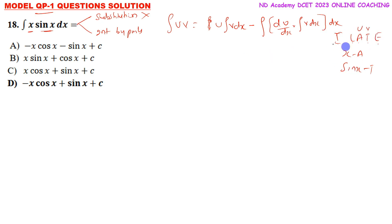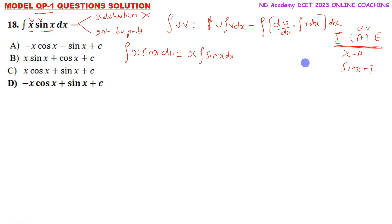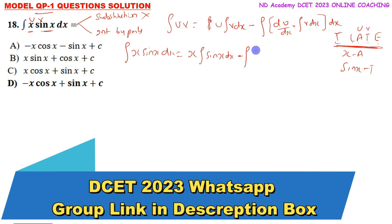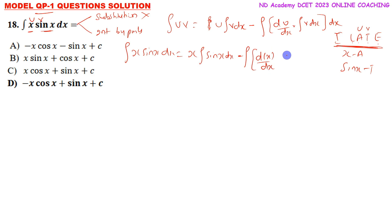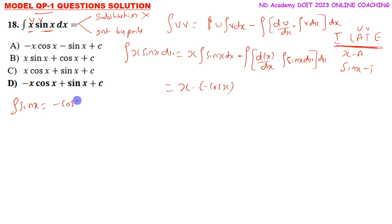So this is u and this is v. Therefore, integration of x sin x dx equals x times integration of sin x dx, minus integration of differentiation of x times integration of sin x dx, whole dx. Integration of sin x is minus cos x. So we get x times minus cos x, minus integration of 1 times minus cos x dx.